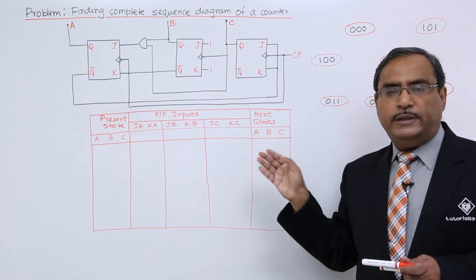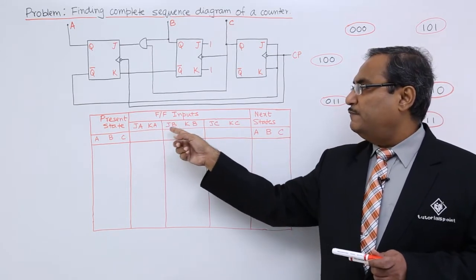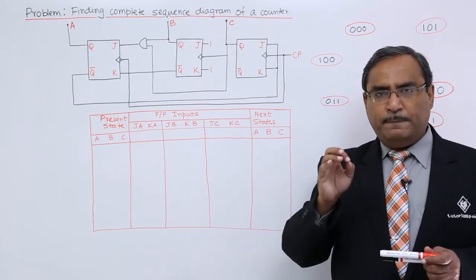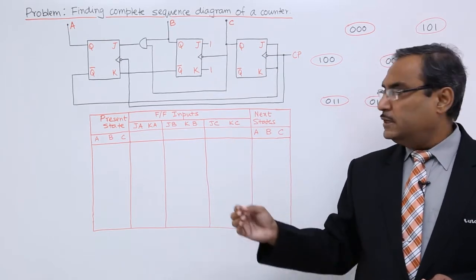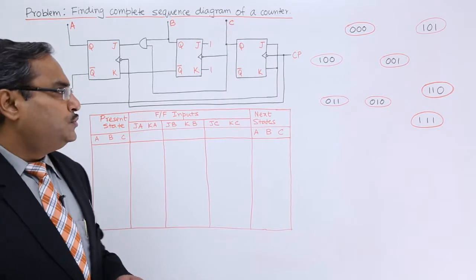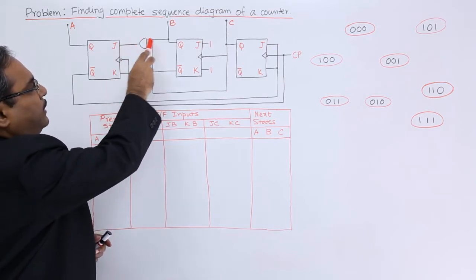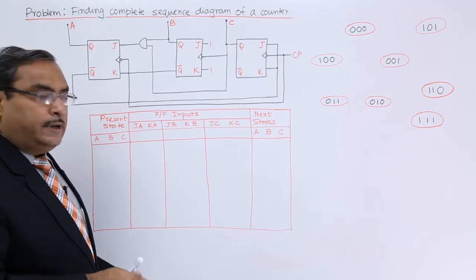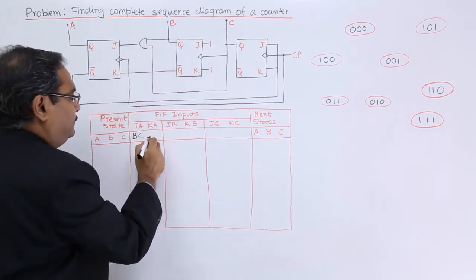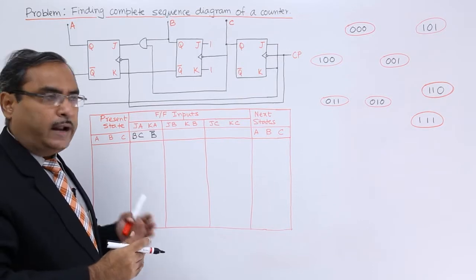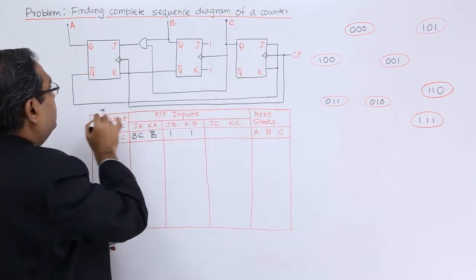Now let me discuss the steps to be done. Here we have made one empty table with the headers: present state ABC and next states ABC, along with flip-flop inputs for flip-flop A, B and C. From the circuit we observe that JA is BC, KA is B-bar, and JB and KB will be 1,1 for flip-flop B, while JC and KC will be A-bar.